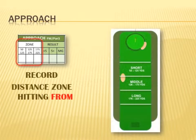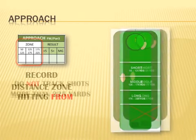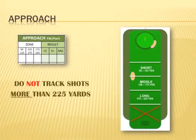In order for your statistical report to compare your approach performance from different distances, you first record one of three distance zones you are hitting from: 50 to 125 yards, 125 to 175 yards, or 175 to 225 yards. You do not track shots hit from more than 225 yards from the hole.